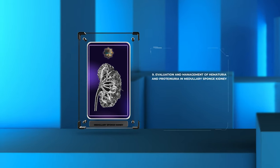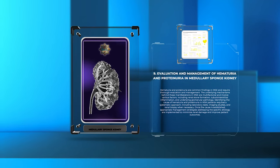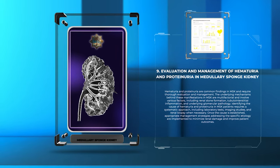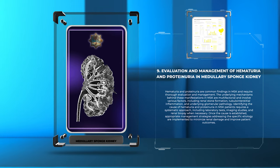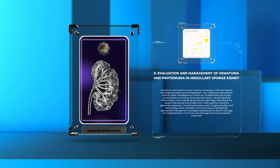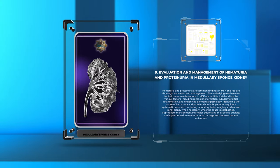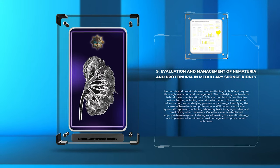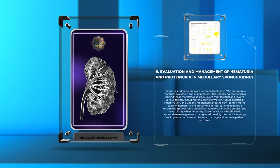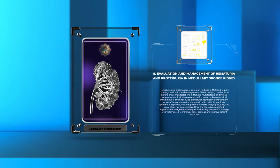Hematuria and proteinuria are common findings in MSK and require thorough evaluation and management. The underlying mechanisms behind these manifestations in MSK are multifactorial and involve various factors, including renal stone formation, tubulo-interstitial inflammation, and underlying glomerular pathology. Identifying the cause requires a systematic approach including laboratory tests, imaging studies, and renal biopsy when necessary. Once the cause is established, appropriate management strategies are implemented to minimize renal damage and improve patient outcomes.